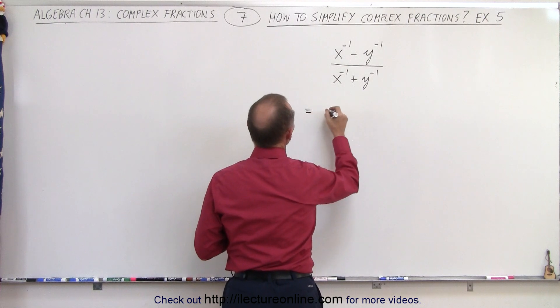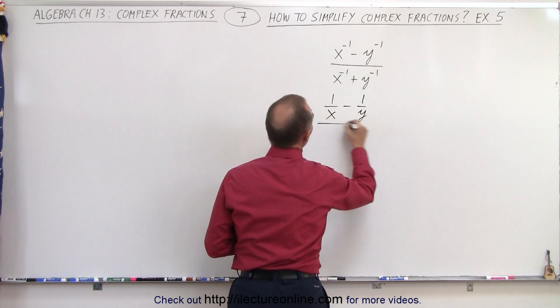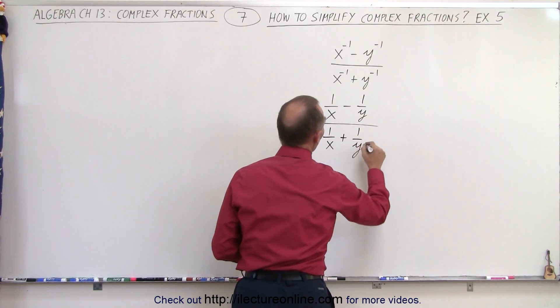So this can be written as 1 over x minus 1 over y divided by 1 over x plus 1 over y. And now indeed, it is a complex fraction.